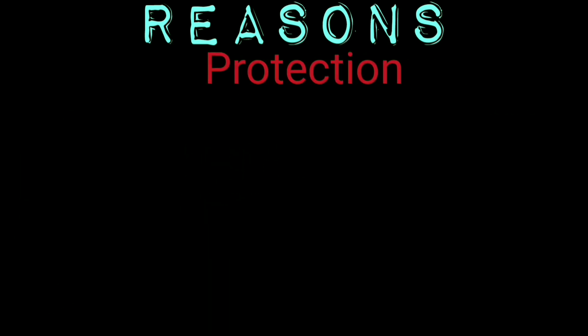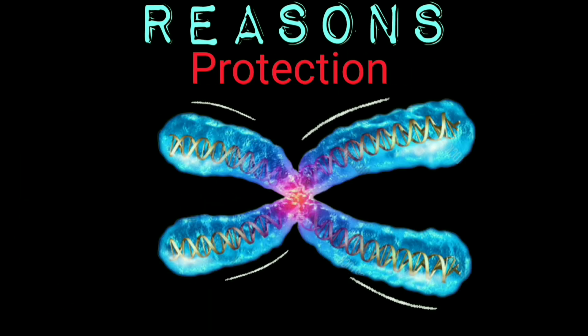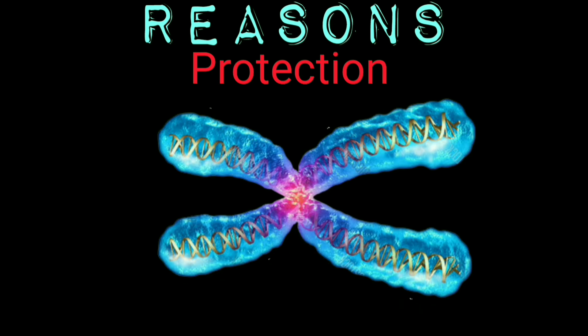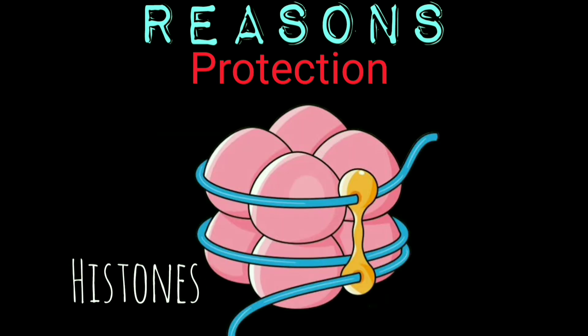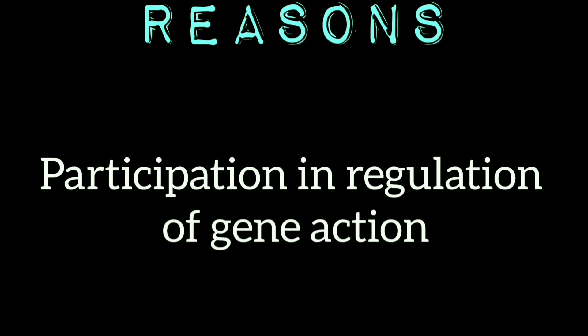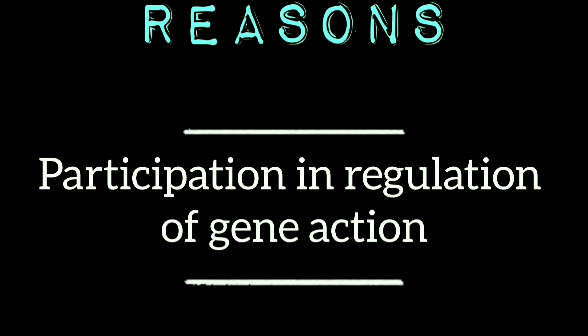Chromosomes provide protection of DNA from being damaged during cell division. In chromosomes, the DNA is not only packaged into 46 relatively very small and sturdy chromosomes, it is also associated with histones and other proteins which protect it from both chemical and physical forces. Participation in regulation of gene action in eukaryotes is another function of chromosomes.